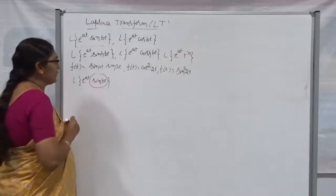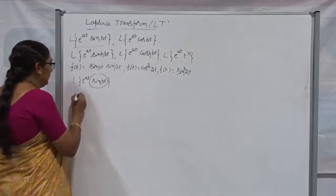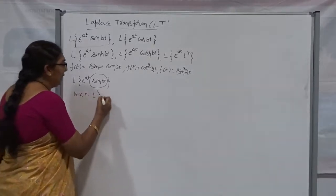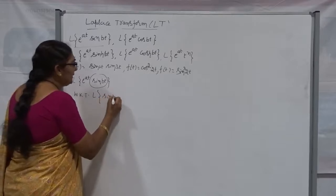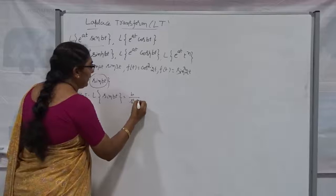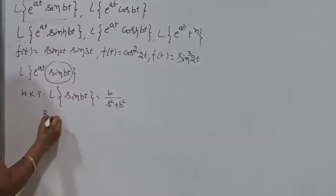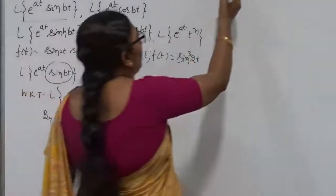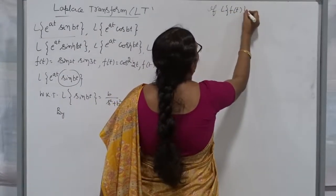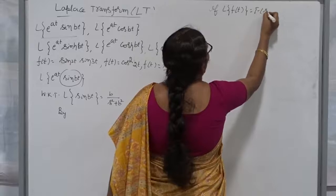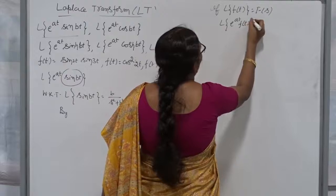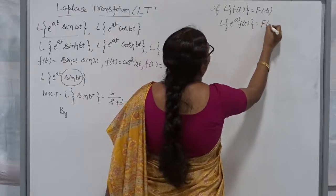First, find out the Laplace Transform of sin Bt. We discussed in the last class that the Laplace Transform of sin Bt is nothing but B divided by s squared plus B squared. Now, the Shifting Property states: if the Laplace Transform of f(t) is equal to capital F(s), then the Laplace Transform of e to the power At into f(t) is nothing but F(s minus A).